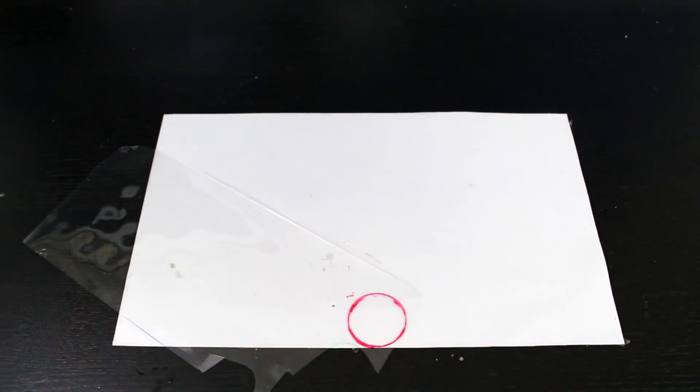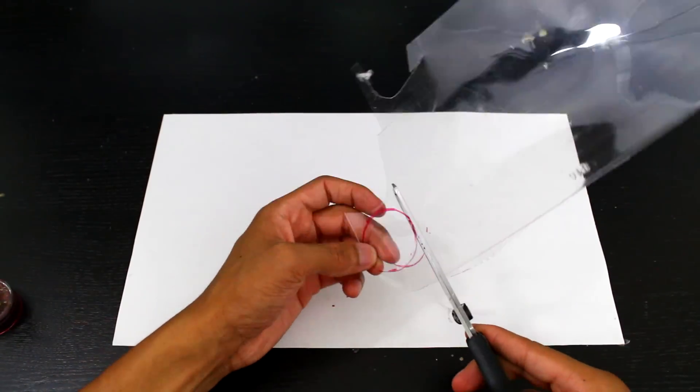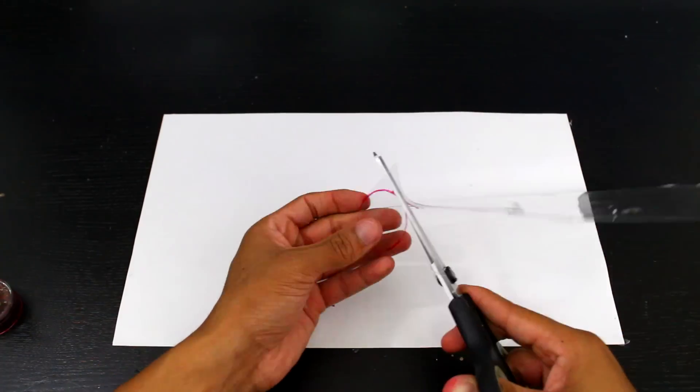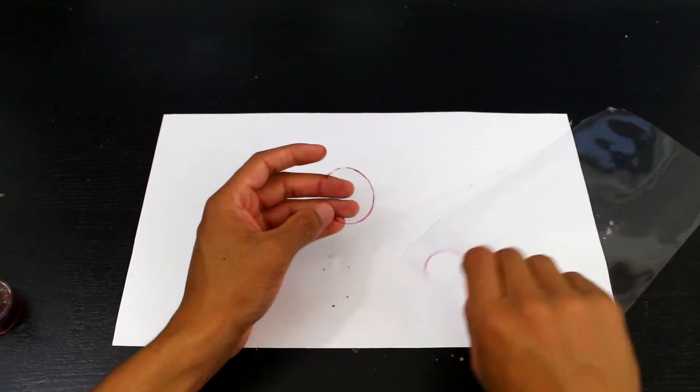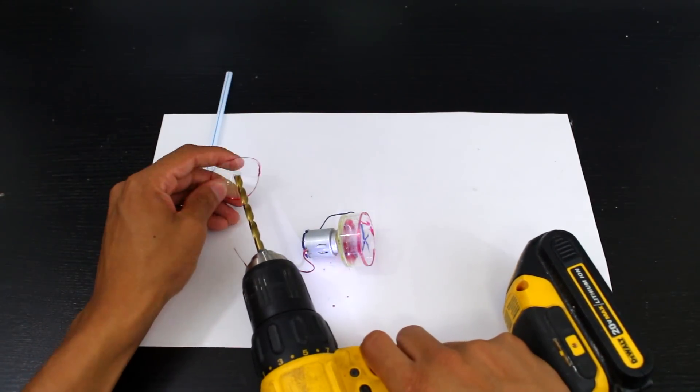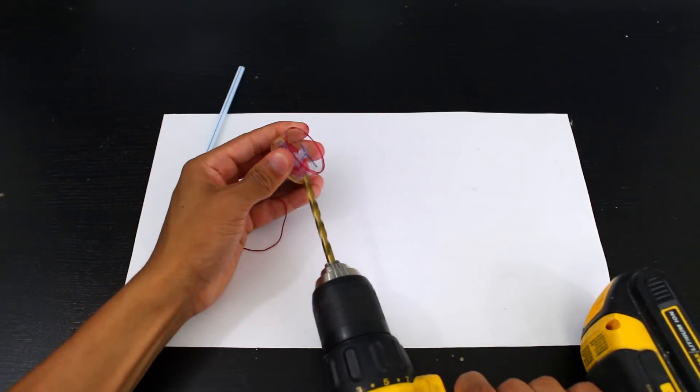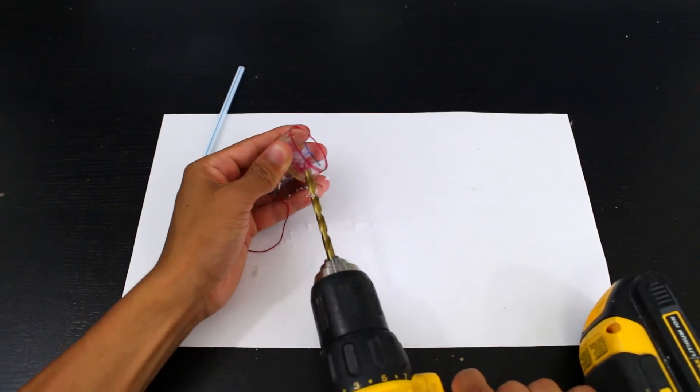Now we'll trace another circle slightly larger than the inside of our pump. And we'll drill a hole in this, this is where the straw will attach for the water intake. And also drill a hole in the side, that will be where the water exits.